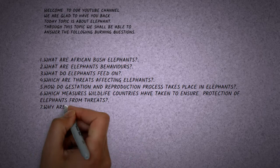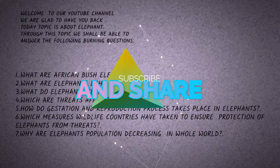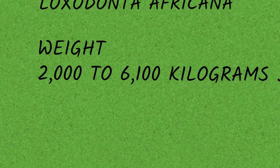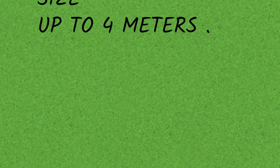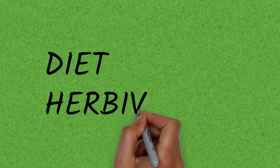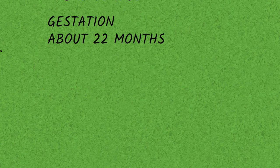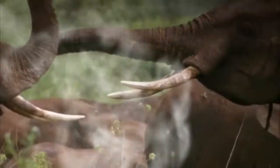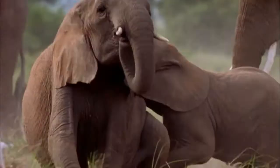6) Which measures have wildlife countries taken to ensure protection of elephants from threats? 7) Why are elephant populations decreasing worldwide? Elephant scientific name: Loxodonta africana. Weight: 2,000 to 6,100 kilograms. Size: up to 4 meters. Lifespan: 60 to 70 years. Habitat: open and closed savannah, grasslands, and arid deserts. Diet: herbivores. Gestation: about 22 months. Predators: humans, and occasionally lions or hyenas.